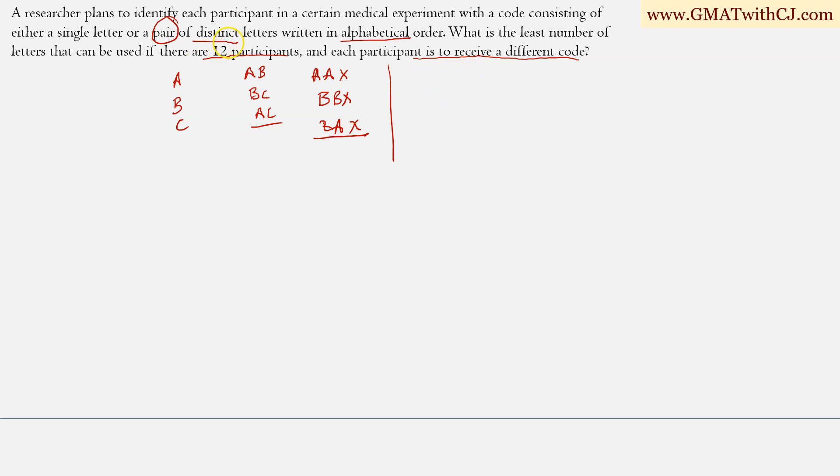Now since the number is pretty small, I'll actually directly start thinking in terms of how many letters I need rather than thinking of a general pattern for N participants. So if I have just one letter, I can generate just one code A. If I have two letters, A and B, how many codes can I generate? I can generate A, B and AB also. Can it be BA? No, it can't be because they are not in the alphabetical order.